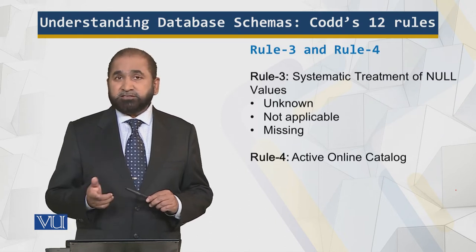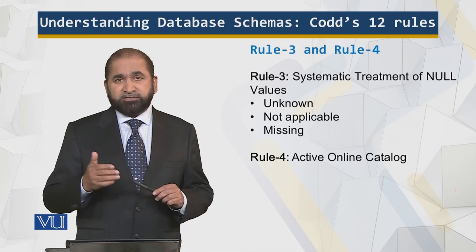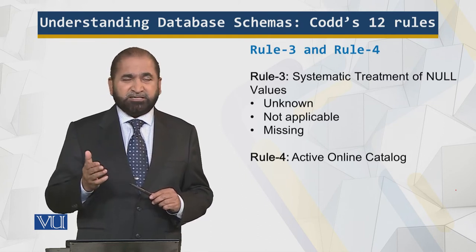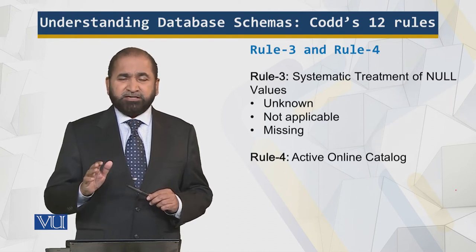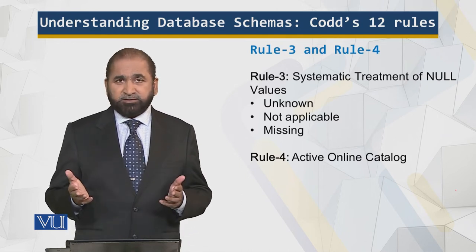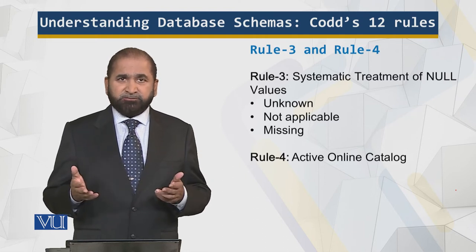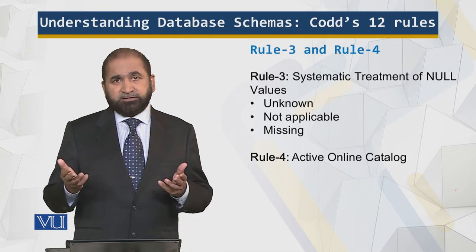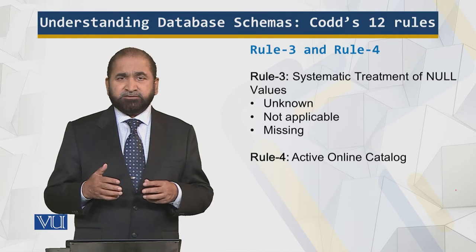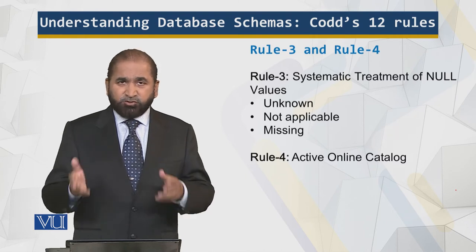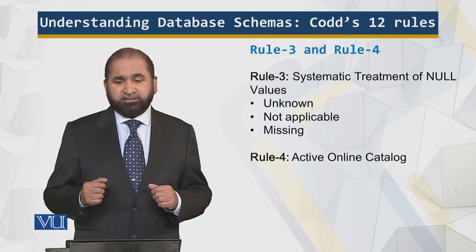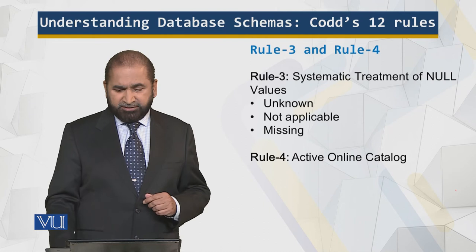Systematic treatment of null: if something is unknown, not applicable, or missing, there should be a consistent and systematic representation — the data type is irrelevant. That will be explained in the next module. Active online catalog means that in my working space I have multiple tables. Tables have their columns, which are attributes; they have their constraints, relationships, and indexes. All that information is again stored in a table, and people with the rights are able to query that table and retrieve the data. This is like a data dictionary or metadata — data about the data itself.